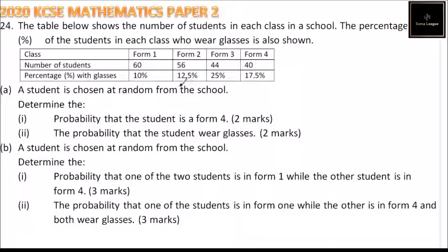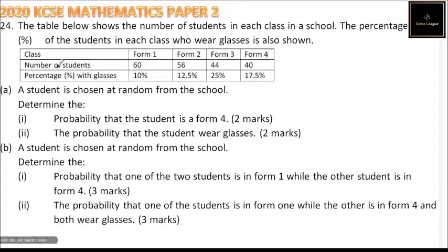This is question number 24, 2020 KCSE Mathematics Paper 2. The table shows the number of students in each class in a school. We have forms 1 through 4, with 60 students in Form 1, 56 in Form 2, 44 in Form 3, and 40 in Form 4.